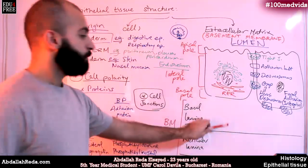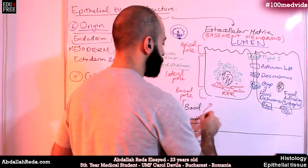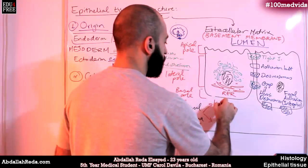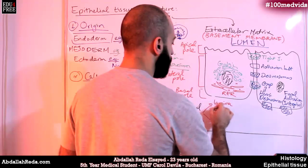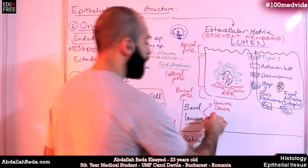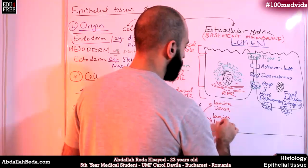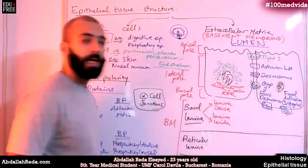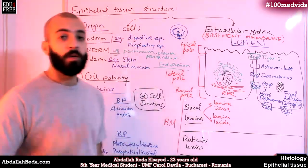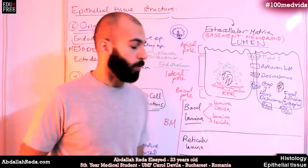The basal lamina can be divided into two layers as well. We have lamina densa — the dense layer — and we have lamina lucida, which is the light layer. Why are they called like this? This depends on their aspect or appearance under the electron microscope.